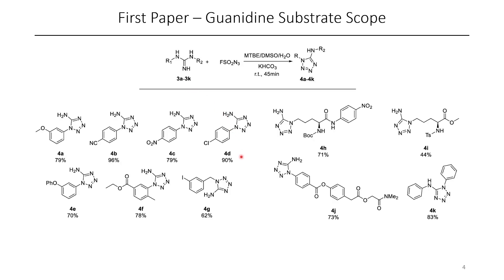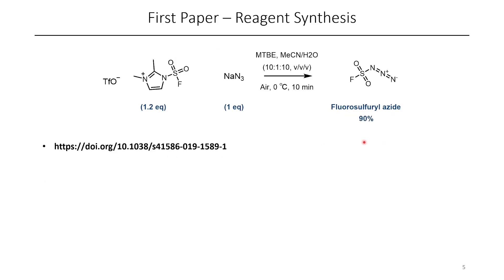The scope of this was also quite good, and you can even see some examples which are derivatives of amino acids, such as these ones which are derivatives of arginine. The reagent that the authors used is readily accessible from an imidazolium-based sulfonyl fluoride, which can be substituted through the use of sodium azide, enabling the synthesis of fluorosulfuryl azide, which could be used in solution.